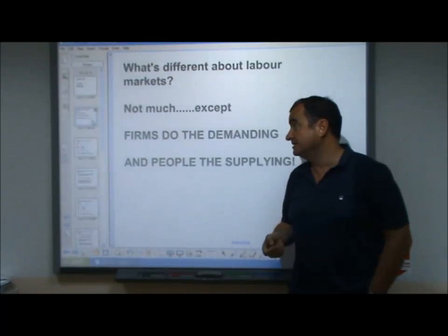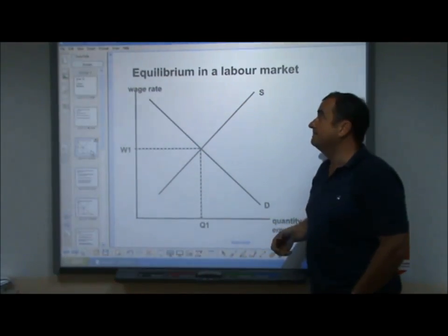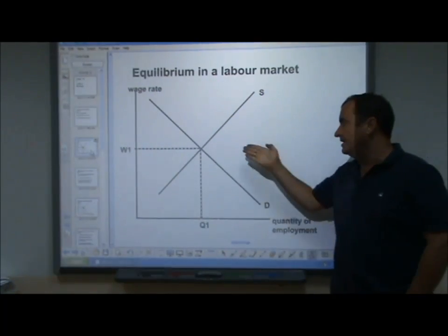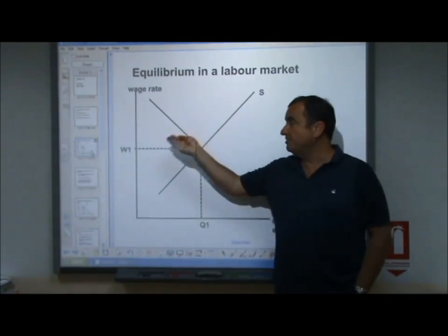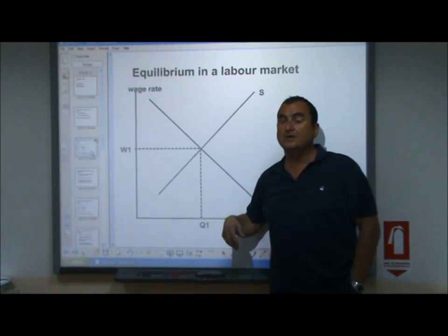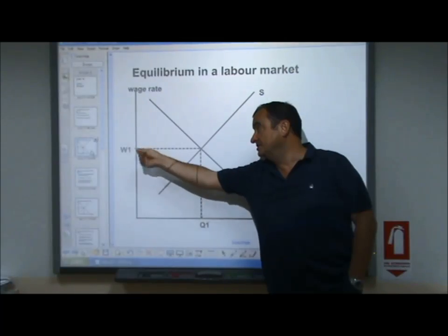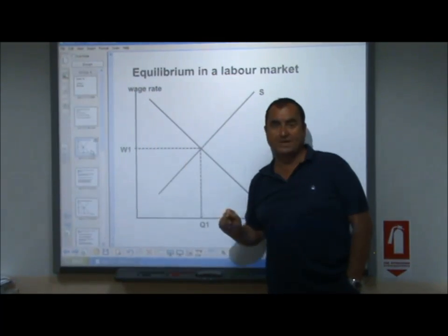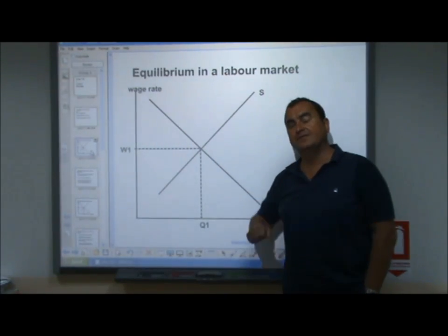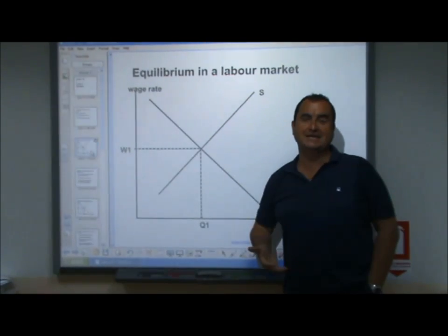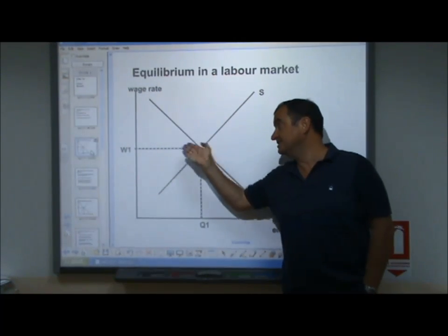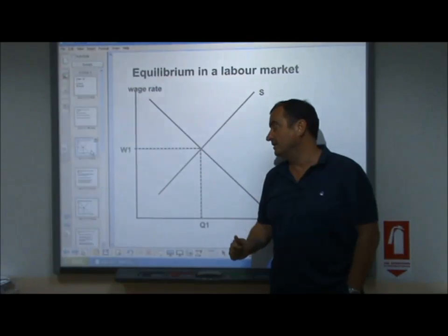Once you get your head around that, these markets operate precisely like any other market. So let's take a look at a labor market. Here we have the supply of labor and the demand for labor and equilibrium price and quantity. The price of labor is the wage rate - you might see W, WR, or P. The equilibrium wage rate W1 is the wage rate at which demand equals supply.